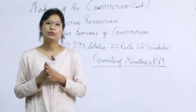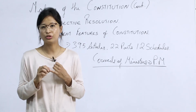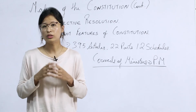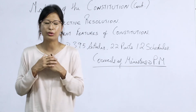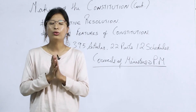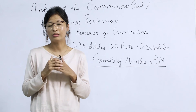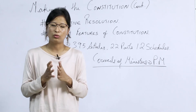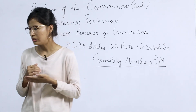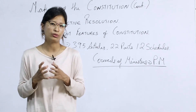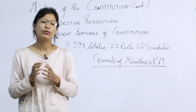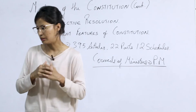Third centralized feature: emergency provisions. There are three types — national emergency, state emergency, and financial emergency. Declaring all three is in the hands of the central government. Fourth, the central government has sole authority over All India Services conducted by the UPSC. In conclusion, the constitution is federal in form and unitary in spirit.